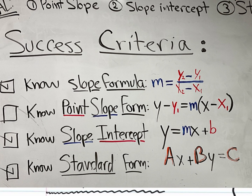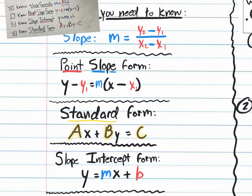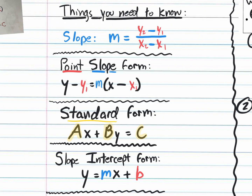You need to know your slope formula: M equals Y2 minus Y1 over X2 minus X1. You need to know point-slope form: Y minus Y1 equals M times (X minus X1). You need to know slope-intercept form: Y equals MX plus B. And standard form: AX plus BY equals C. It's on the wall right there, so you should have this memorized.